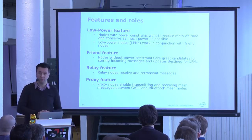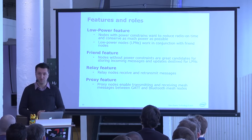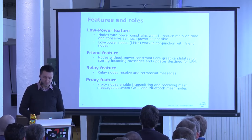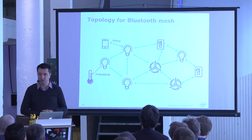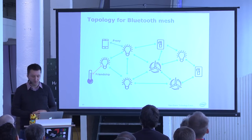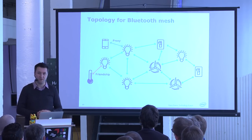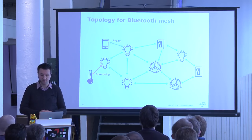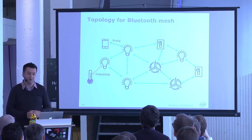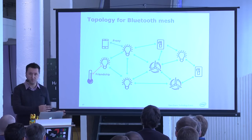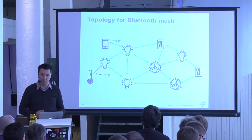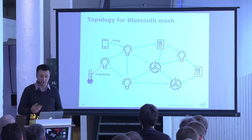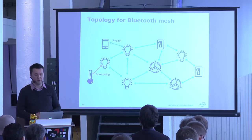Then there's the Relay role: messages need to be relayed to span the network's full width, because a 10-meter Bluetooth range won't cover a whole building. Relays forward messages from one node to another. The Proxy role handles backwards compatibility — a phone that isn't mesh-capable connects via GATT connection to a proxy node, which bridges it into the network. Once you choose a proxy, you go through that specific proxy; you can't send messages to everybody and hope someone picks it up.